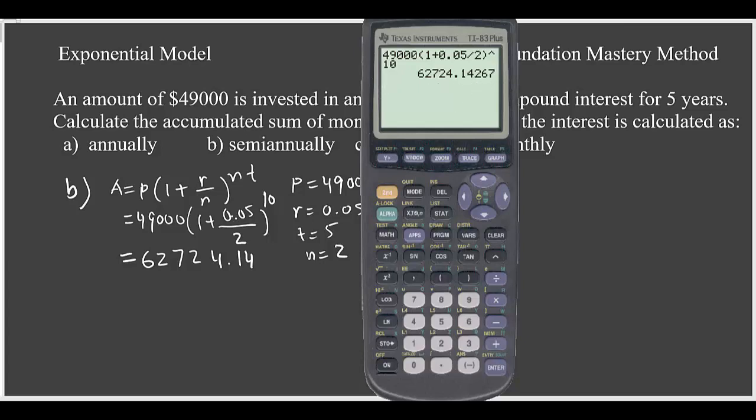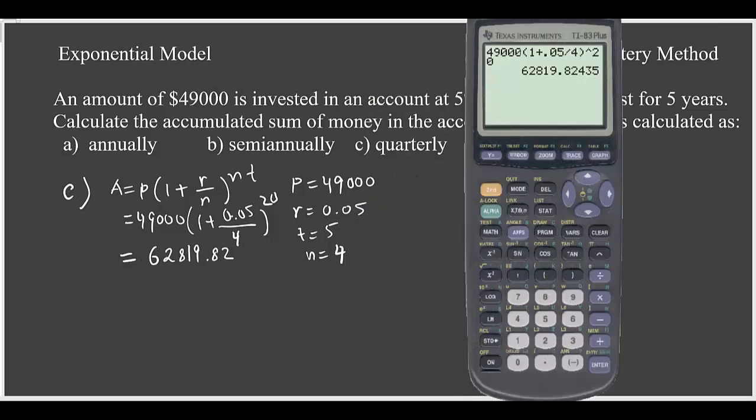We'll take the next one quarterly. Now for quarterly calculation, we have our n equals 4. So we plug n equals 4, and then 4 times 5 is 20. 49,000 times (1 + 0.05/4)^20. So that gives me $62,819.82.